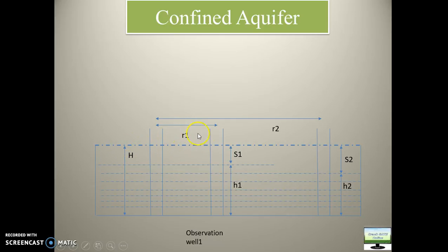This R1 is the distance of observation well 1 from the center of pumping well. This R2 will be the distance of observation well 2. There may be n number of observation well or there may not be any observation well. I will take these two cases based on two different numerical problems. Where you will be able to understand more clearly. So now you can see how we can write this H. H will be equal to H1 plus S1 or H2 plus S2.